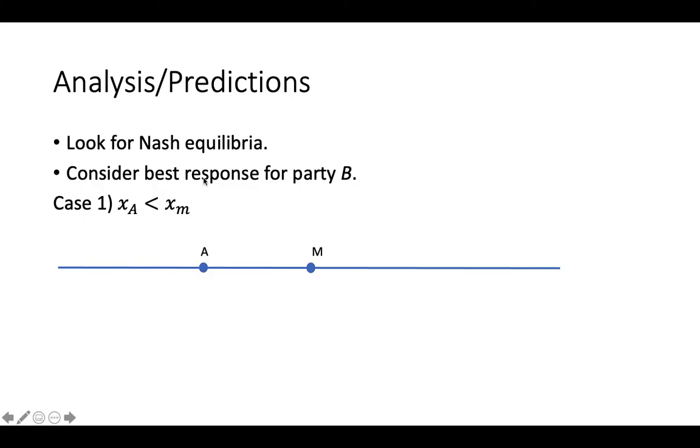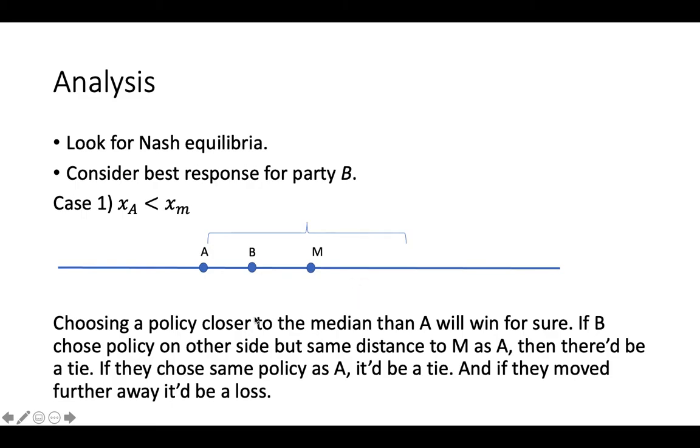So we're going to start with party B, and let's say that A chooses a policy that is below the median. So that would be just represented here. I didn't write X sub A. Hopefully it's clear what's going on here. So if you're B, we should be able to think about what would be best in this situation. They can win for sure. They can maximize their probability of winning. They'll have a probability of winning of one if they choose a policy that's anywhere closer to the median.